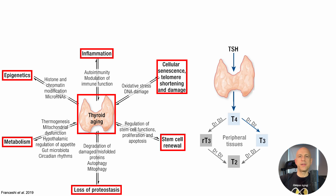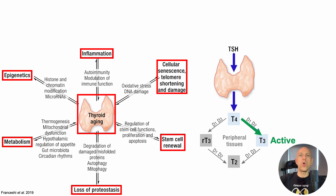TSH, or thyroid stimulating hormone, induces the thyroid gland to produce inactive thyroid hormone, or T4 — named T4 because it has four attached iodine atoms. One of those iodine atoms is removed to produce the active form, T3. T4 can also be converted into reverse T3, which diverts away from the production of active thyroid hormone.